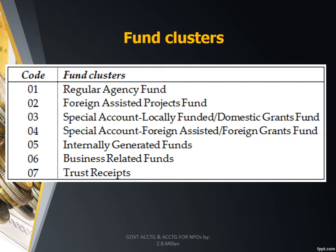This means there are separate books and separate reporting for the different funds classified per cluster. For example, Romblon State University maintains three fund clusters — separate books for the general fund or regular agency fund, a book for school income and fiduciary funds, and separate books for income from income-generating projects.